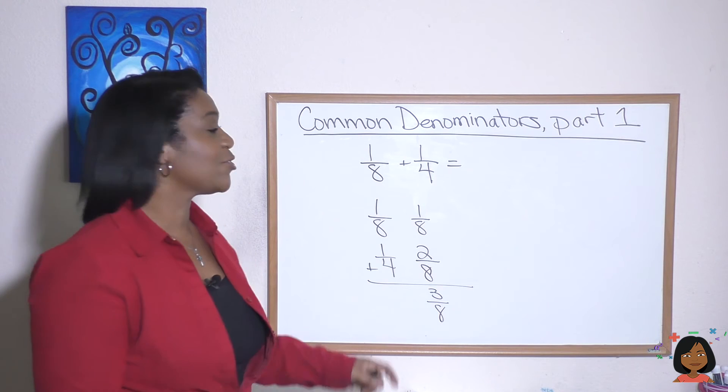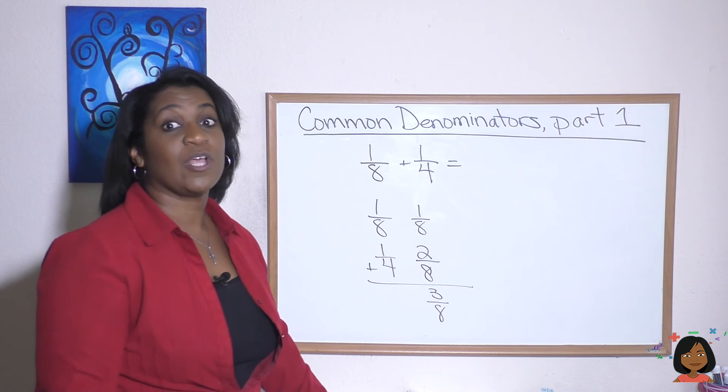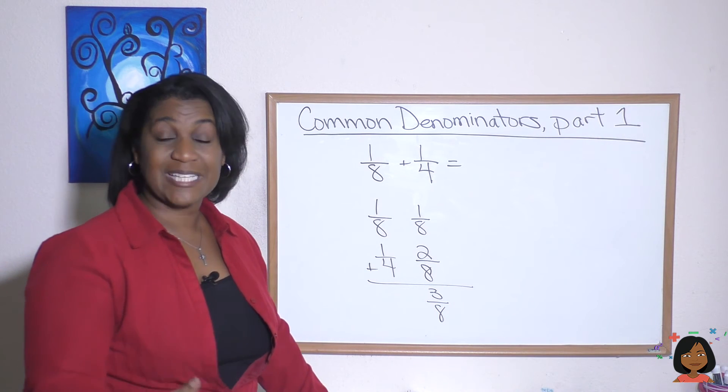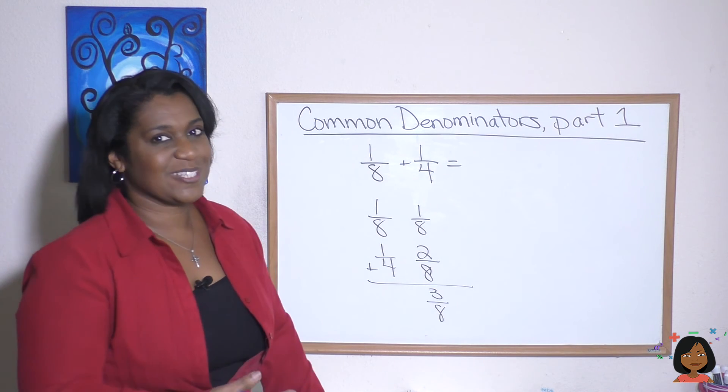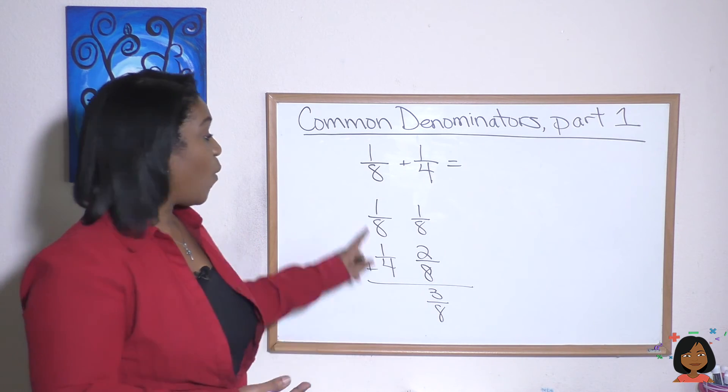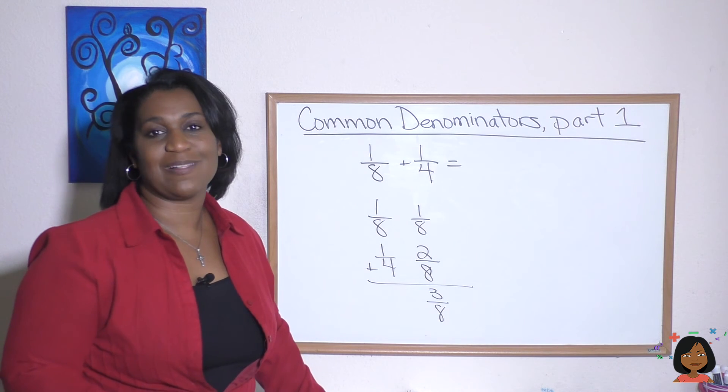That's how we start with common denominators. You look for your least common multiple. That will be your new denominator. We were just lucky enough that in these problems, one of our fractions already had the least common multiple as its denominator.